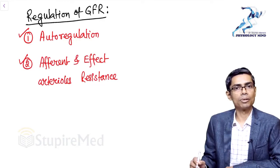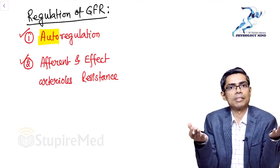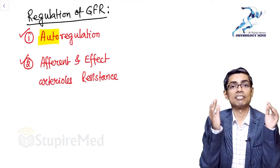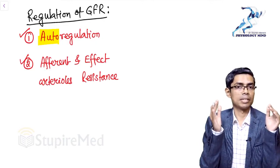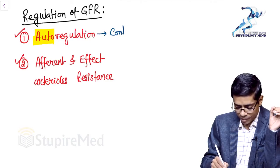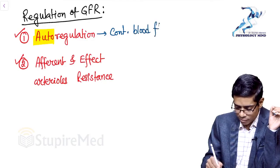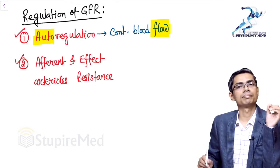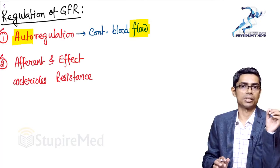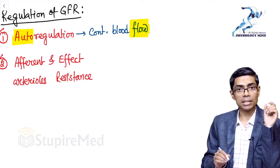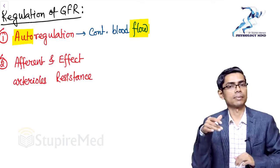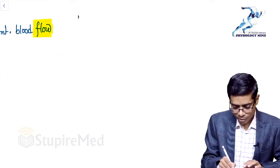Autoregulation literally means self-regulation. There was an MCQ asking what autoregulation means — the answer is constant blood flow. Autoregulation means constant blood flow in an organ, irrespective of blood pressure, within a particular range.